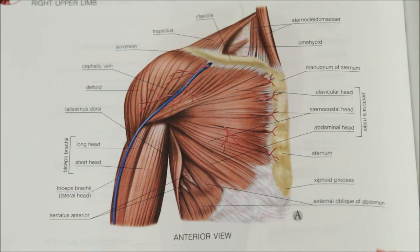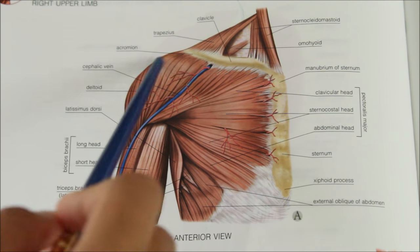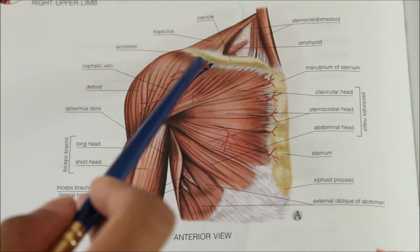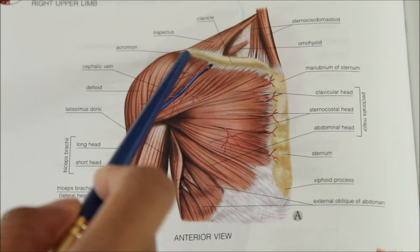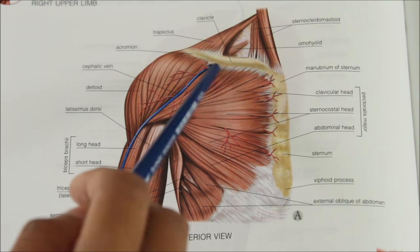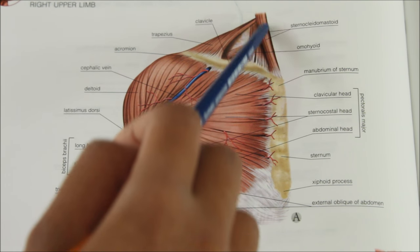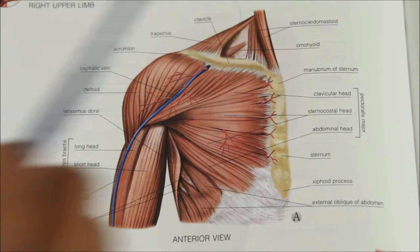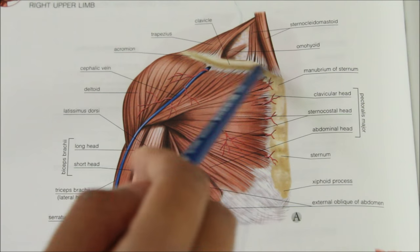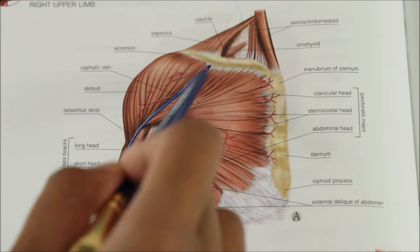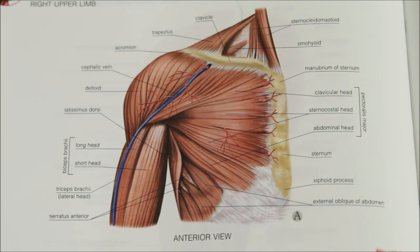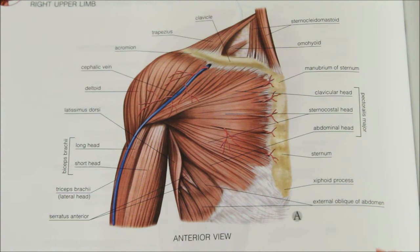Now let us learn about the muscle attachments on the clavicle. The deltoid originates from the anterior border of the lateral one-third of the clavicle. The trapezius inserts into the posterior border of the lateral one-third. The clavicular head of the sternocleidomastoid originates from the rough superior surface of the medial two-thirds. The clavicular head of the pectoralis major originates from the anterior surface of the medial two-thirds. Two more muscles, the sternohyoid and the subclavius, will be explained on the specimen.